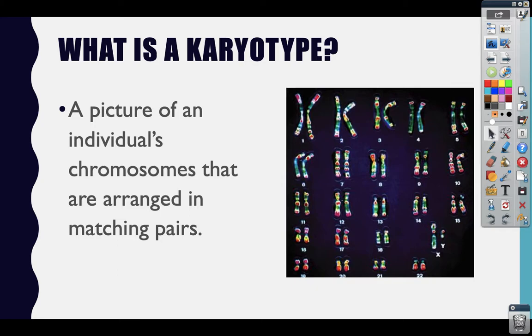A karyotype is a picture of a person's chromosomes. Make sure that you write down that term 'karyotype' and know that it's a picture of a person's chromosomes. They are used to diagnose chromosome number disorders and chromosome structure disorders.